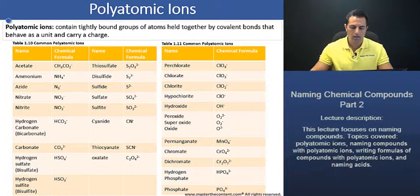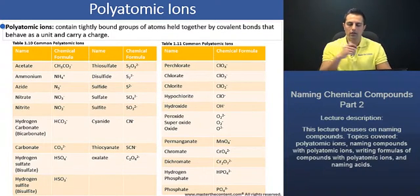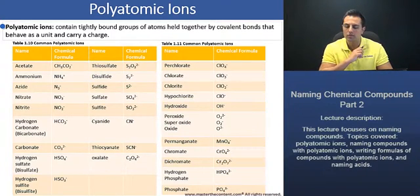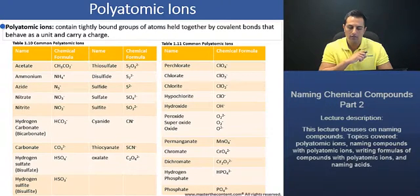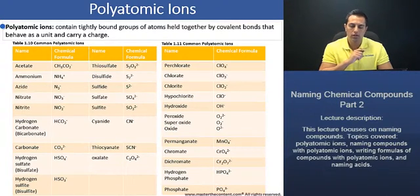Polyatomic ions. Let's begin here with a definition. Polyatomic ions contain tightly bound groups of atoms and are held together by covalent bonds that behave as a unit and carry a charge.